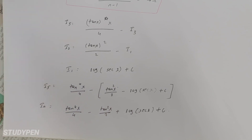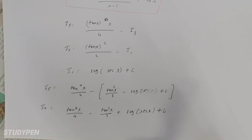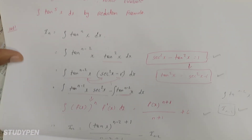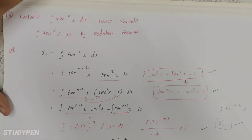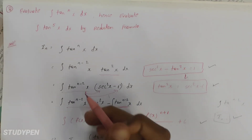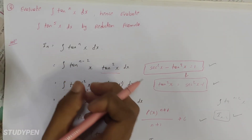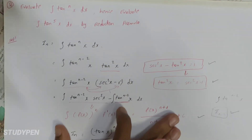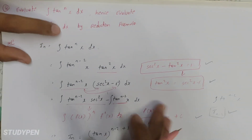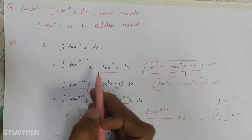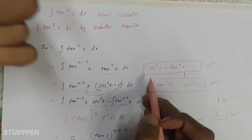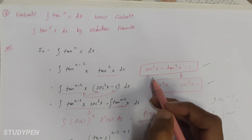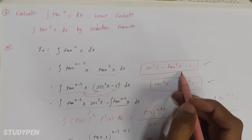I hope you will get the answer in the exact same way. Easy steps to solve these. First, the tan energy solution — you will get the final answer: tan power of 4x by 4 minus tan square x by 2 plus log of sec x plus c.